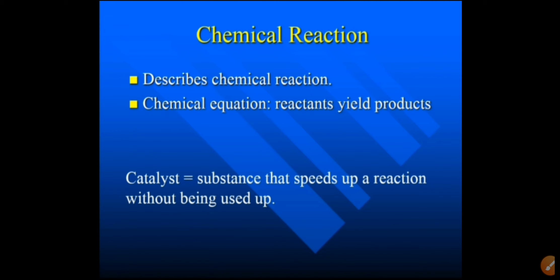What is a chemical reaction? A chemical reaction is a process generally characterized by a chemical change in which the starting materials — meaning reactants — are different from the products. Chemical reactions tend to involve the motion of electrons, leading to the formation and breaking of chemical bonds.